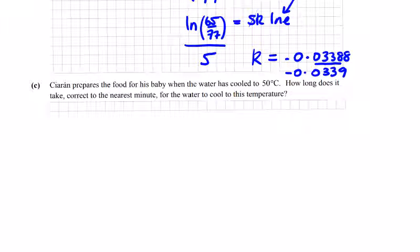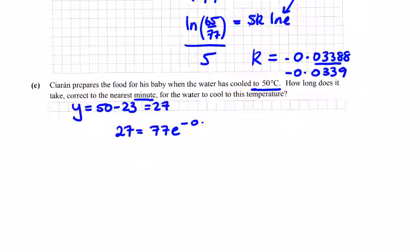Part C. Ciarán prepares food for his baby when the water has cooled to 50. Let's get Y. Y is equal to the difference between the water temperature and the room temperature. So Y is 27 for this part. And we're looking for T, the nearest minute. So we have k now. So 27, Y is equal to A, 77E to the power of minus 0.0339 times T.